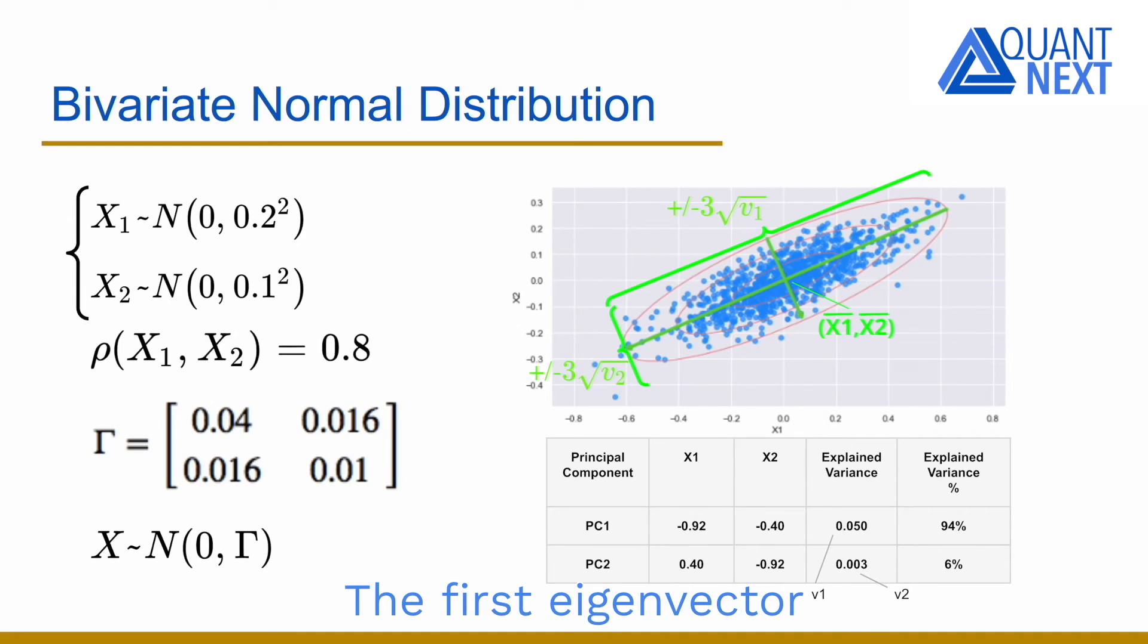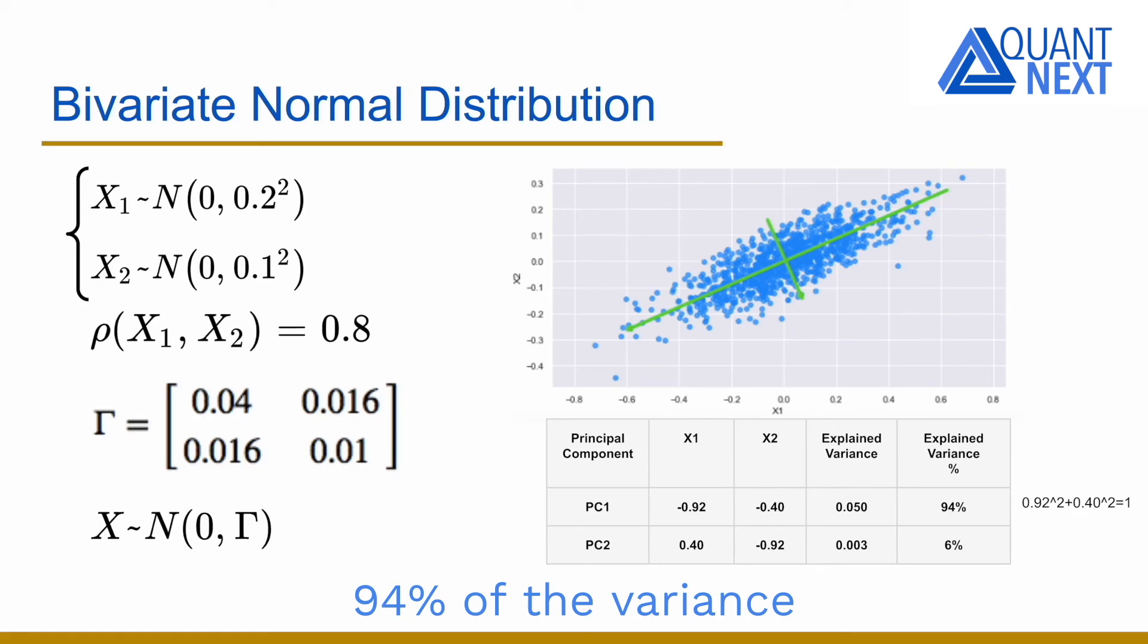The first eigenvector with the highest eigenvalue points in the direction of the first axis of the ellipse, the longest one, while the second eigenvector points in the direction of the second axis. In this example, 94% of the variance is explained by the first principal component.